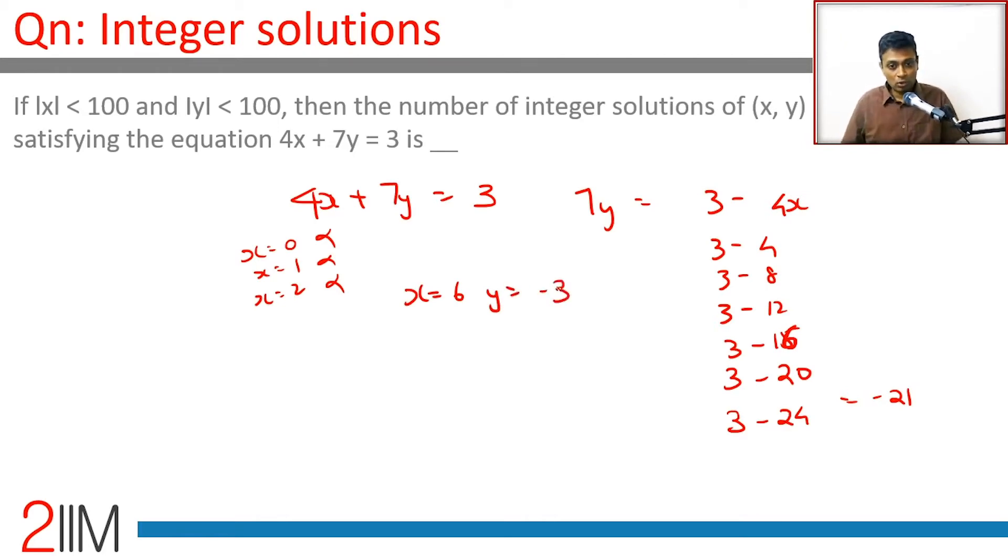4 times 6 is 24, 7 times minus 3 is minus 21, equals 3 - that works. Now think about this: if you keep increasing x, y will keep decreasing. But remember, if you increase x by 1, this side goes up by 4. 4 is not a multiple of 7.